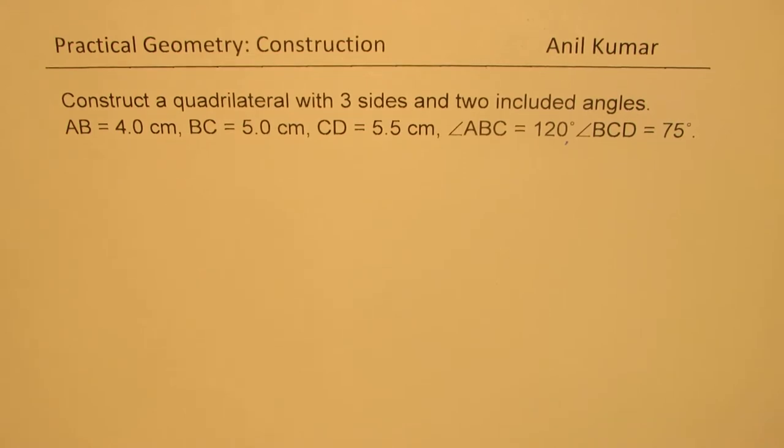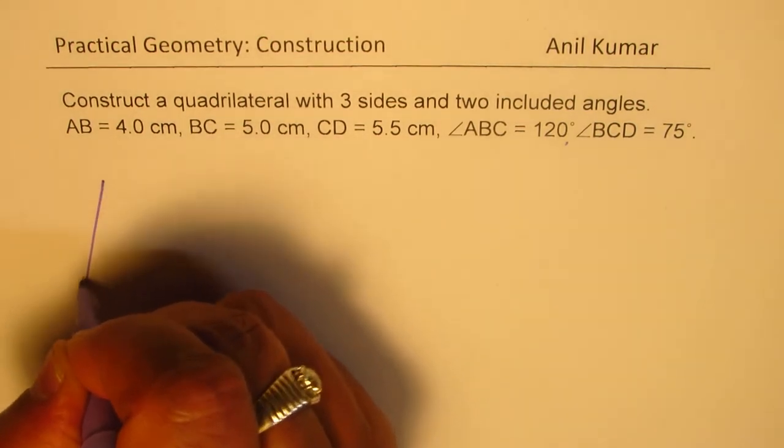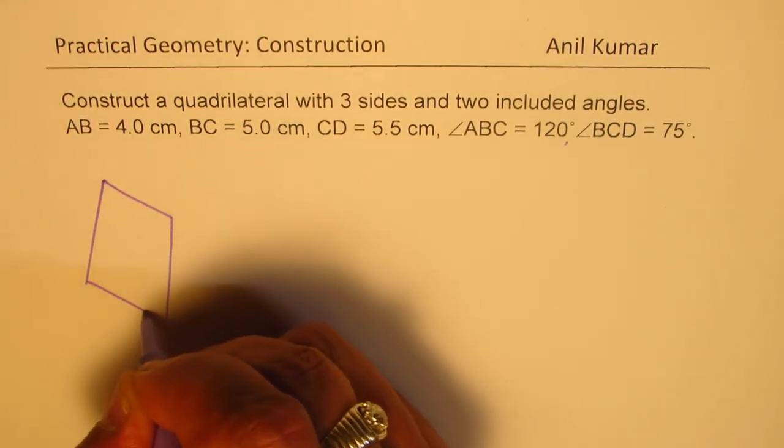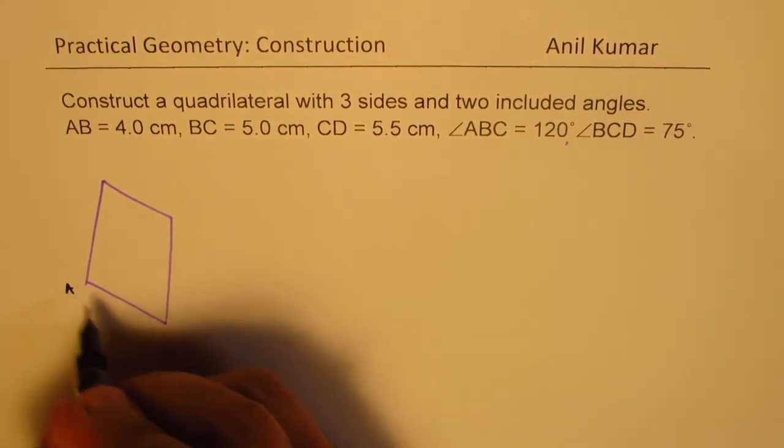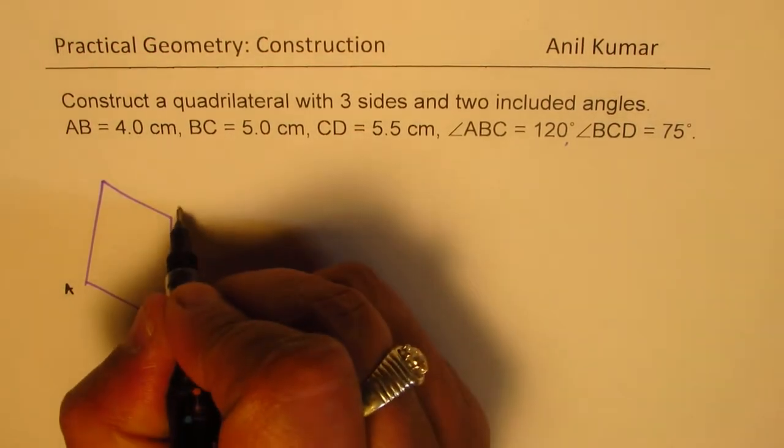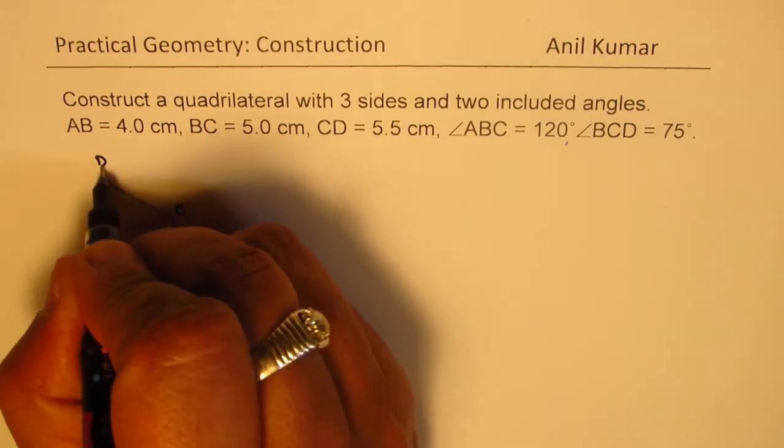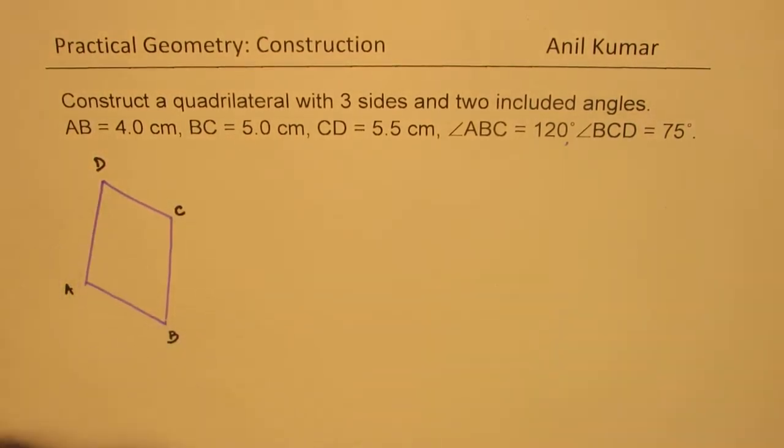As always, you should first construct a rough sketch. Let me just make a quadrilateral here and label this as ABCD. When you make a rough sketch, don't think much, but this cyclic order is important.